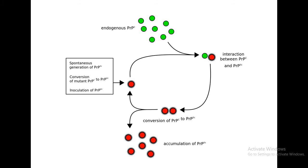When we consider replication, prions multiply by transmitting a misfolded protein state. When a prion enters a healthy organism, it induces existing properly folded proteins into the diseased prion form. The prion acts as a template to guide misfolding of more proteins into prion form, causing misfolding of PRPC, and finally more PRPC proteins are converted into PRPSC.